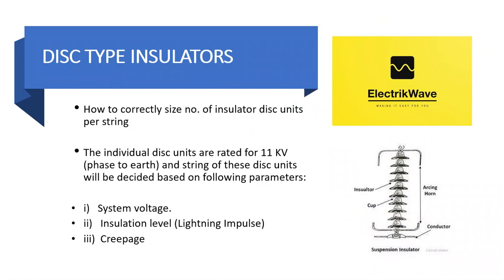Now let's see how to correctly size the number of insulator disk units per string. The individual disk units are rated for 11 kV phase to earth, and the string of these disk units will be decided based on the following parameters: 1. System voltage, 2. Insulation level, 3. Creepage.